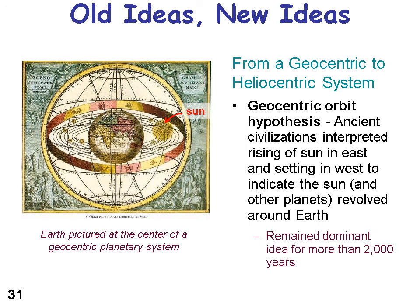Ancient civilizations interpreted the Earth as being the center of the universe. The sun rose in the east and set in the west, indicating that the sun moved and revolved around the Earth. That remained the dominant idea for more than 2,000 years. Here we have an early diagram with the Earth at the center — geocentric. Geo meaning Earth, centric meaning center — so the planets and the sun orbit around the Earth.